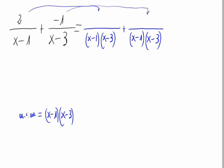So, x minus 1 times x minus 3 divided by x minus 1 is x minus 3. So, we have to multiply 2 by x minus 3.